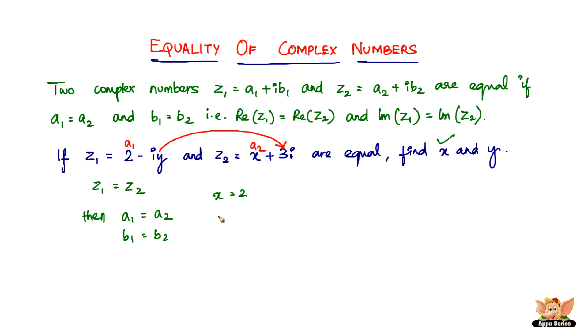So let me write that down. Here we have x = 2, we found x, and then we have -y = 3, which makes it y = -3, thereby we find y as well.